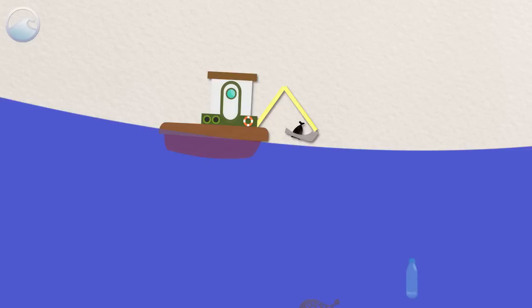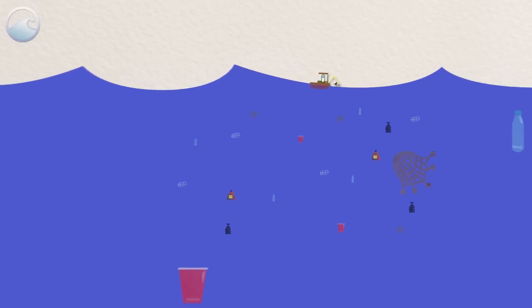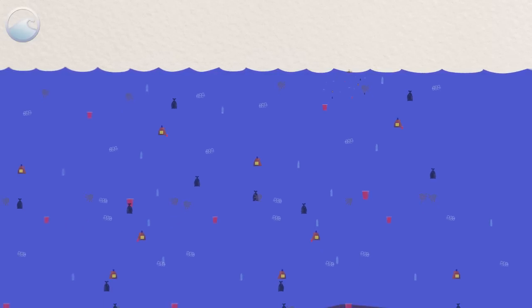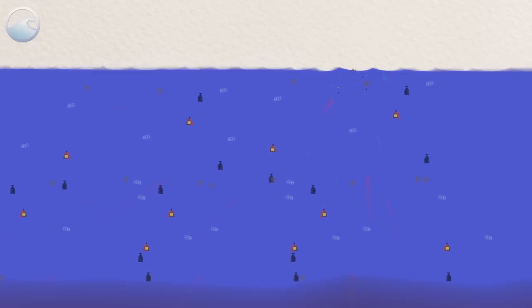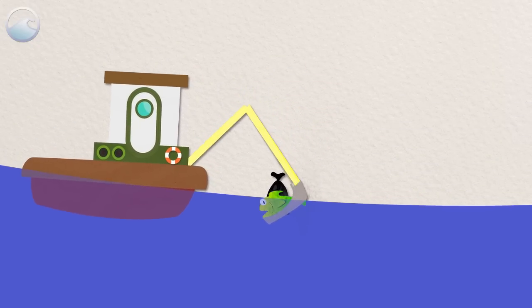The first challenge is the sheer size of these garbage patches. They're huge. They're constantly moving with ocean currents, and there's debris from the ocean's surface all the way down to the sea floor. Not to mention all the marine life we would disrupt if we tried to just scoop up debris.